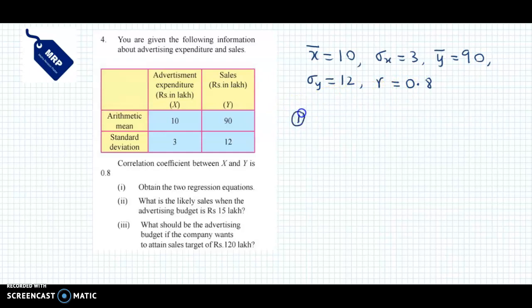Now we have to find the regression equations. Step number one: x̄ is already given, x̄ = 10. This is given. Step number two: we need ȳ. ȳ is also given, ȳ = 90. This data is also given.